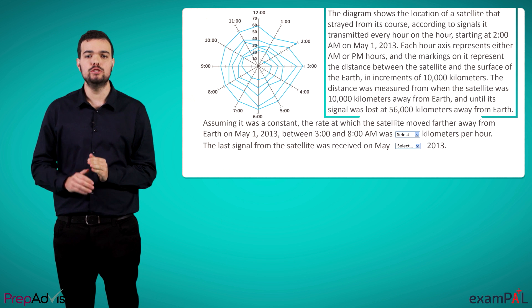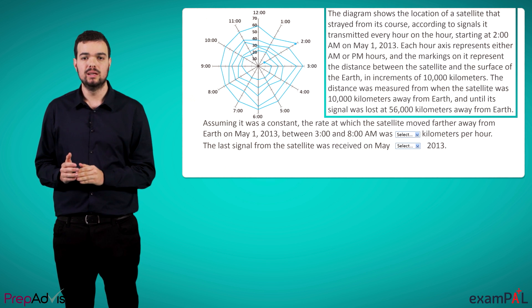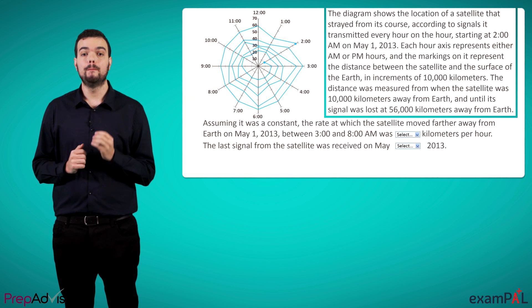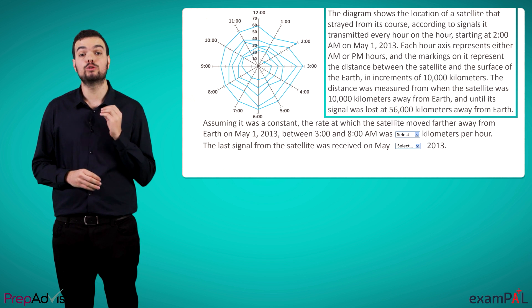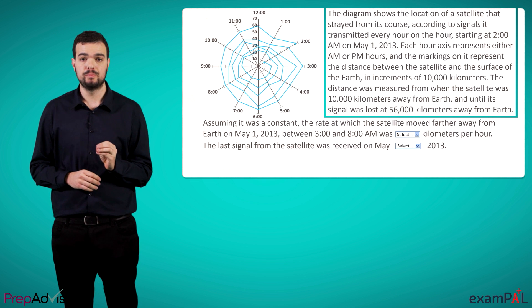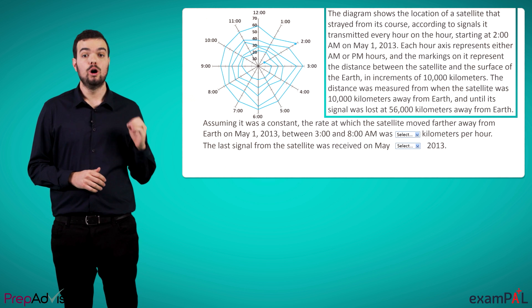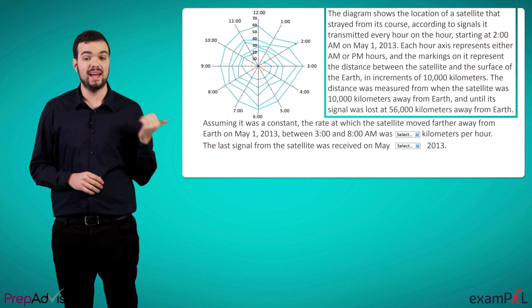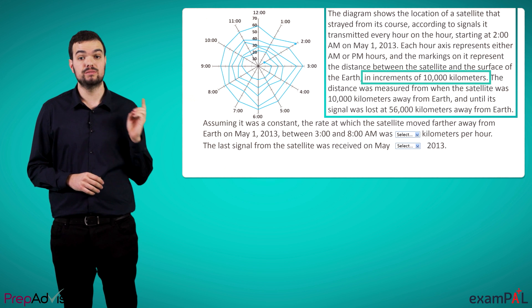Next to the graph, we'll find a passage of text which we have to read. Not only do we need to read the text in order to understand the question, but the text is also often crucial to understand the information presented in the table. For example, in this case, only by reading the text will we understand that the increments of 10 on the y-axis represent thousands of kilometers.